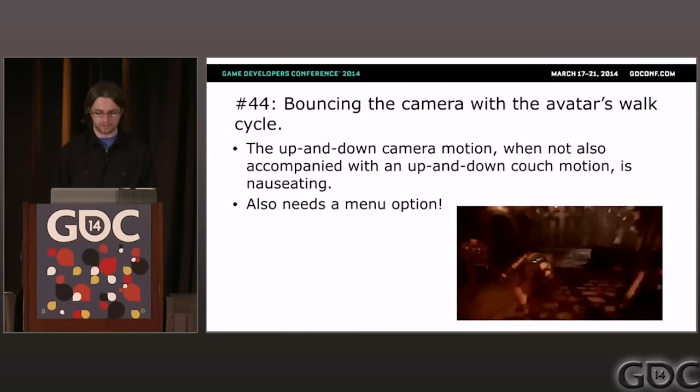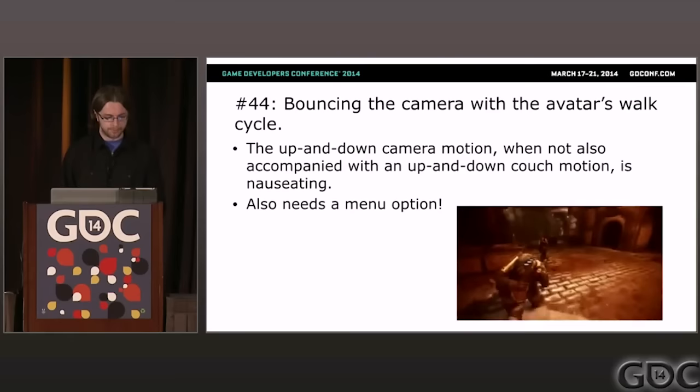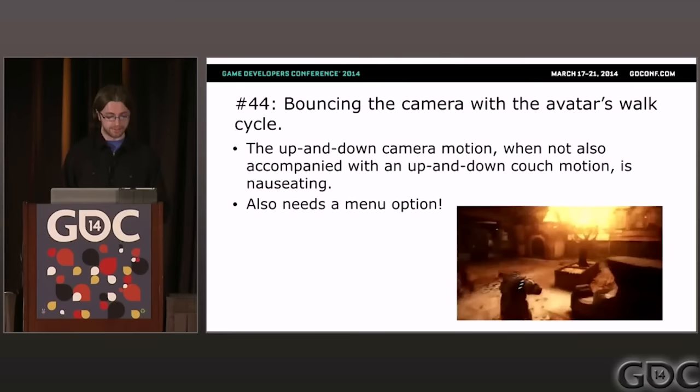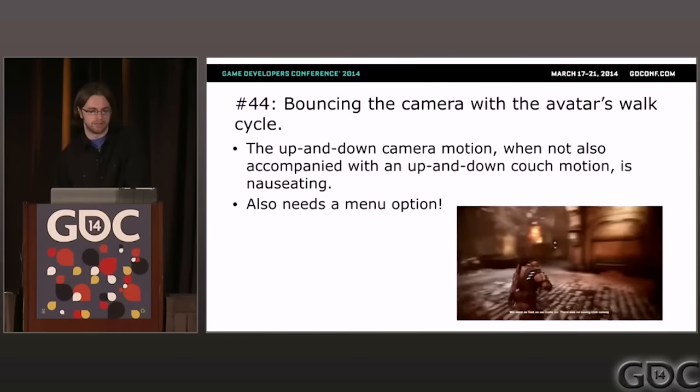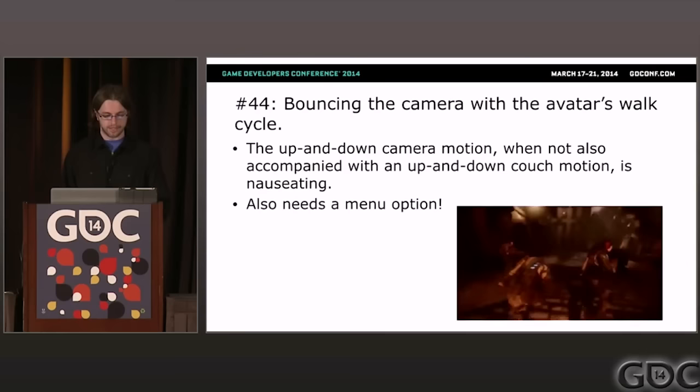Problem forty-four: bouncing the camera with the avatar's walk cycle. This is another common one, especially in over-the-shoulder games. The goal is to make the camera feel more real, but feeling real to you might feel nauseating to someone else. Camera bobbing is just a longer, slower shake, and equally likely to trigger simulation sickness. You should be able to disable this as well — I've seen plenty of games with an option to disable it. Please do it.